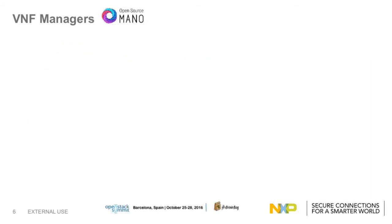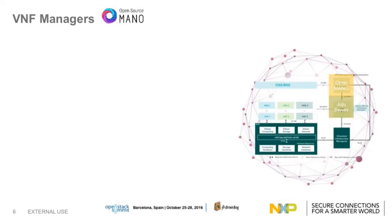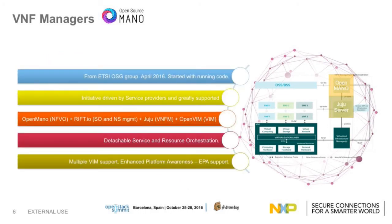Moving forward, we have Open Source MANO — we call it something like OSM — a homegrown product from the ETSI open source group. The governance model is that already existing open source software is stitched together to provide minimum basic functionality. It is an initiative greatly driven by service providers. The open source software used includes Open MANO for NFV orchestration, Rift.io for service orchestration and network service management, Juju Charms from Ubuntu as VNF manager, OpenVIM as virtual infrastructure manager. OSM also supports OpenStack as VIM. It has service orchestration and resource orchestration as decoupled, and it predominantly supports EPA and multiple VIM.